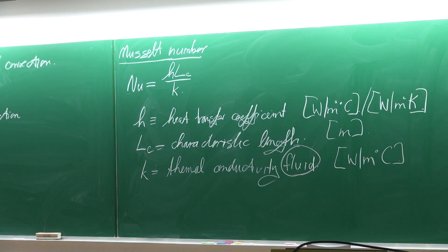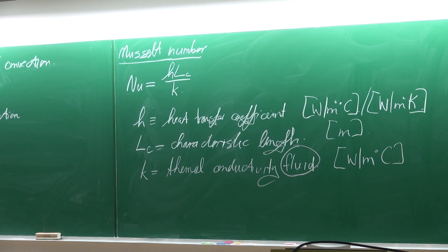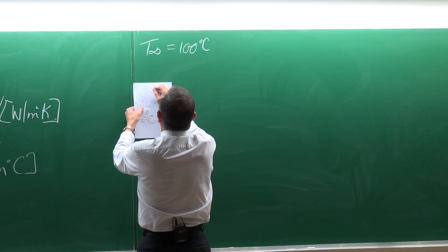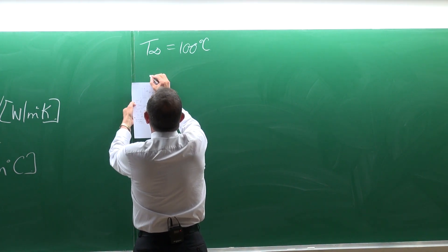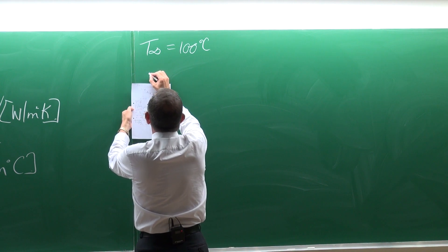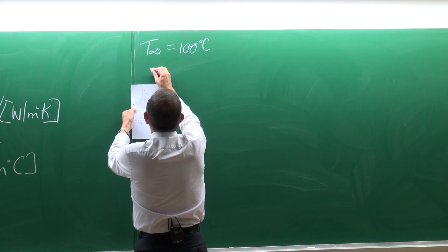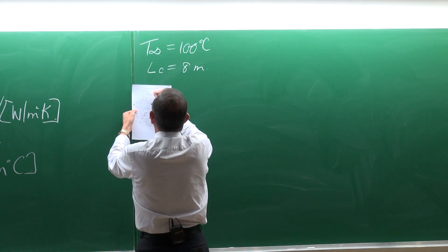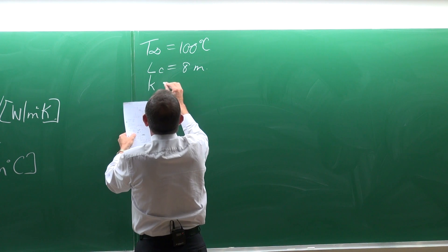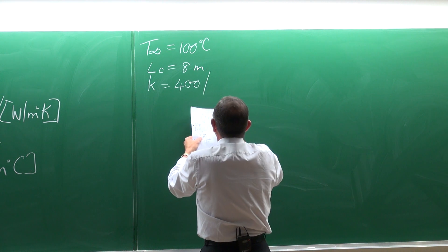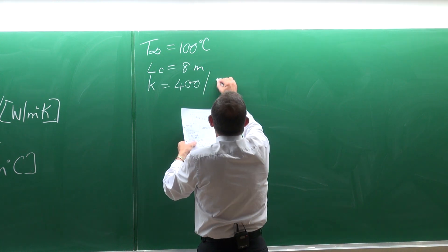Now let's suppose we have a case where the T infinite is 100 and the characteristic length is 8 meters.